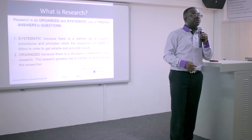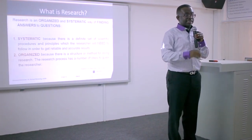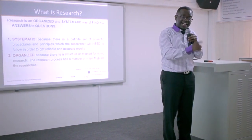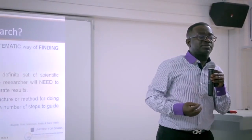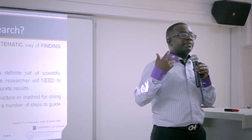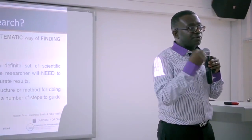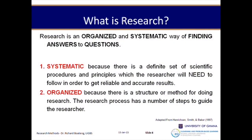If your car has a taillight broken and you take it to a lawyer, the lawyer will ask different questions compared to what a mechanic will ask. A policeman may ask yet different questions. For every particular discipline of science or knowledge, there are certain rubrics or procedures that you follow. That is why we say that research is systematic — it has a defined set of scientific procedures and principles that have to be adhered to.